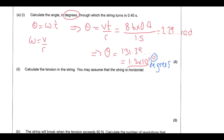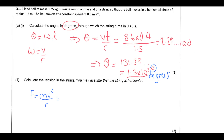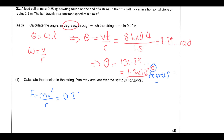Calculate the tension in the string assuming the string is horizontal. If the string is horizontal, the tension is going to be the centripetal force. Centripetal force is given by mv²/R. So its mass was 0.25 × 8.6² ÷ 1.5, which gives 12.326, so 12 newtons. You could also solve this by calculating angular speed and doing ω²R, but this is the most straightforward approach.